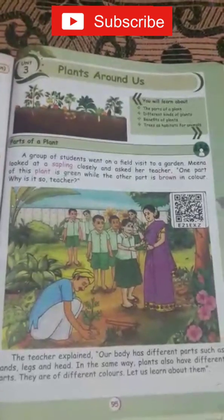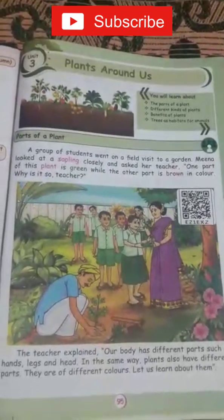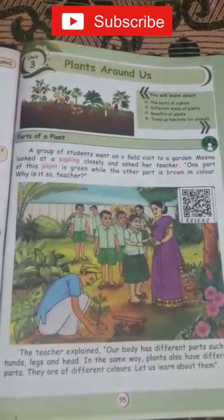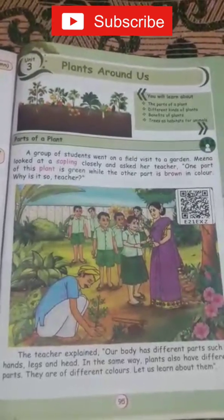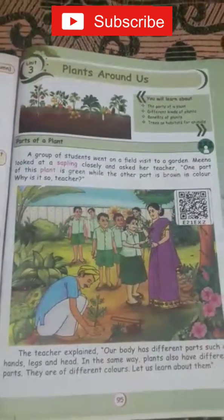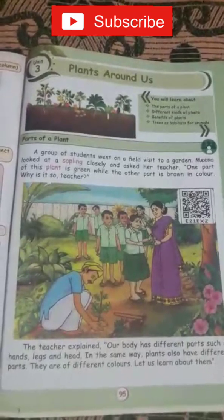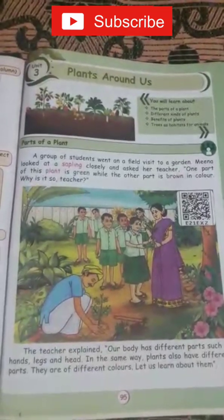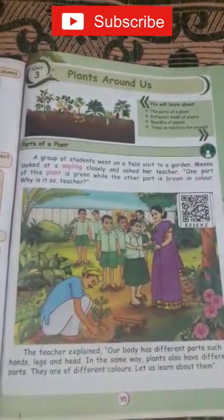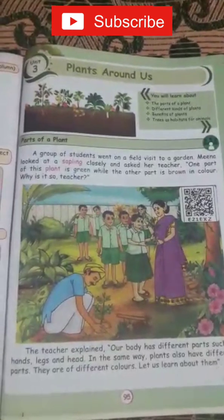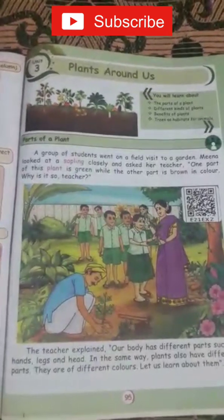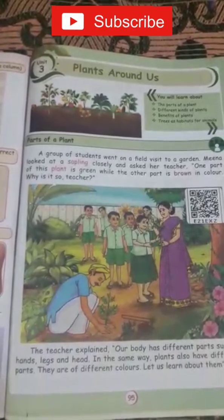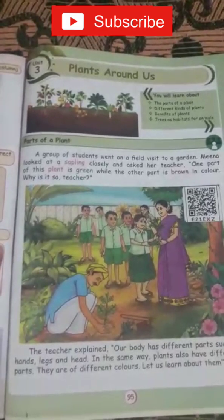The teacher explained: our body has different parts such as hands, legs, head, etc. In the same way, plants also have different parts. They are different colors. Let us learn about them. Children, you know there are many parts in the plants.